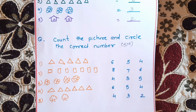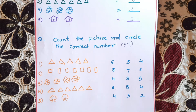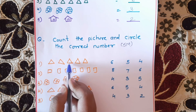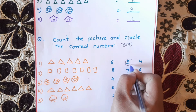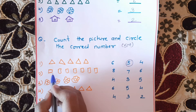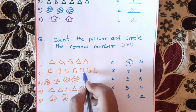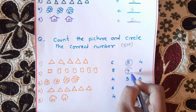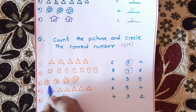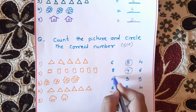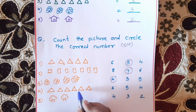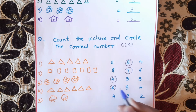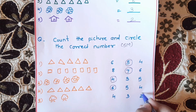The next question is: Count the pictures and circle the correct number. This is a total of 5 questions and 5 marks — 30 marks. If you have pictures, start the count and then circle the right number. For example: count 1, 2, 3, 4, 5 — the right option is 5. Next: 1, 2, 3, 4, 5, 6, 7 — right option is 7.